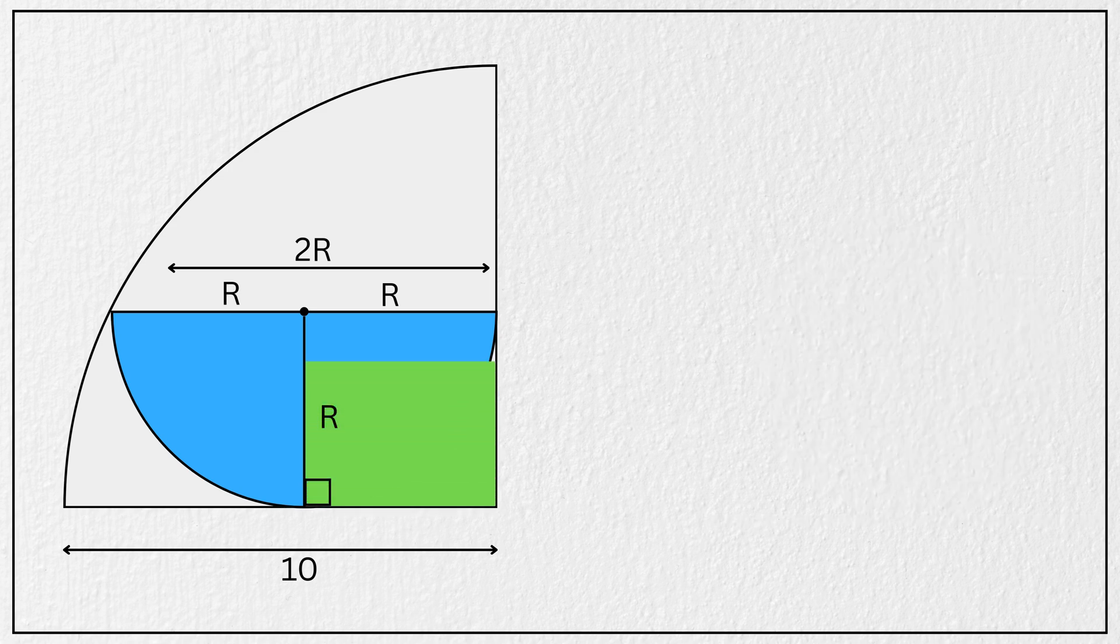Now, look at this green shaded shape. Both of these angles are right angles by the radius tangent theorem. And this vertex angle of the quarter circle is also a right angle that means this fourth angle must also be equal to 90 degrees, right? That means this green shaded shape is nothing but a square.